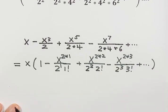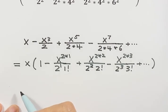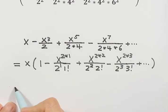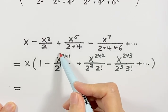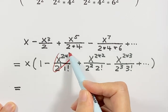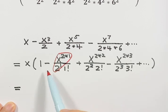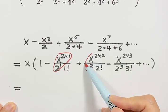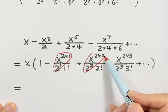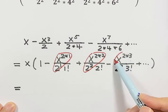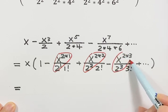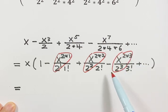So next we try to figure out what's the general term. We try to combine these two together, including the negative sign, and put it on top. Same here — combine them, including the negative sign, put it on top.